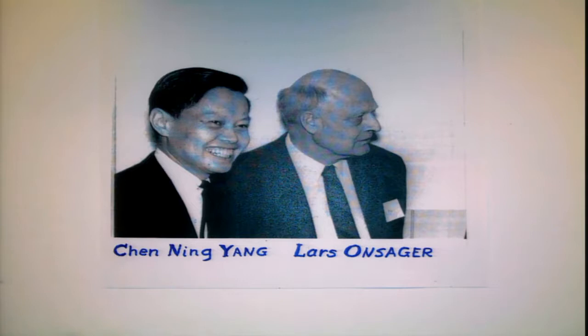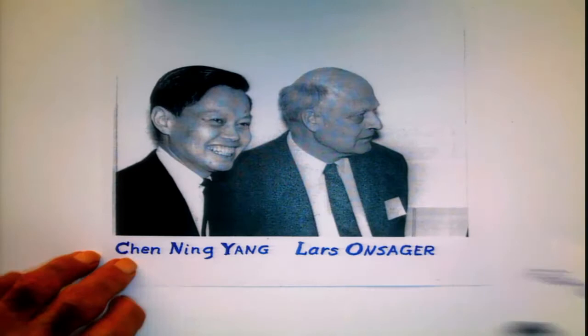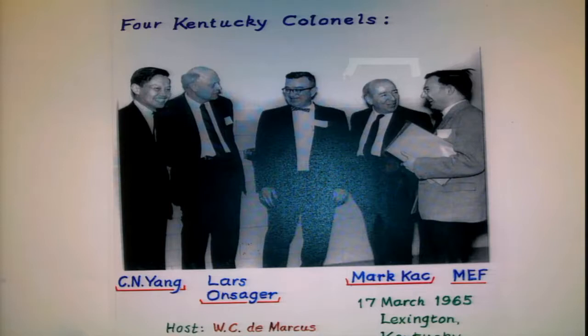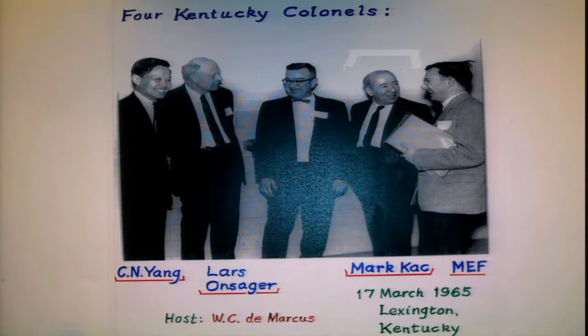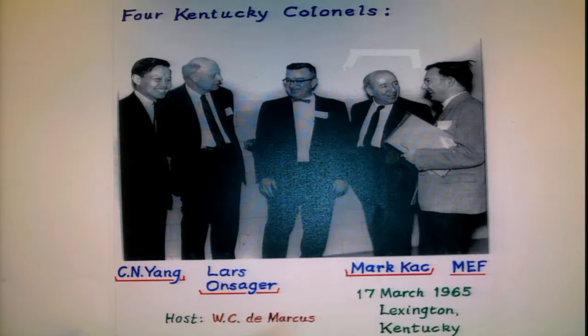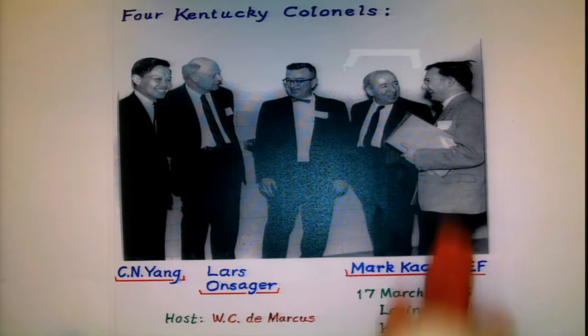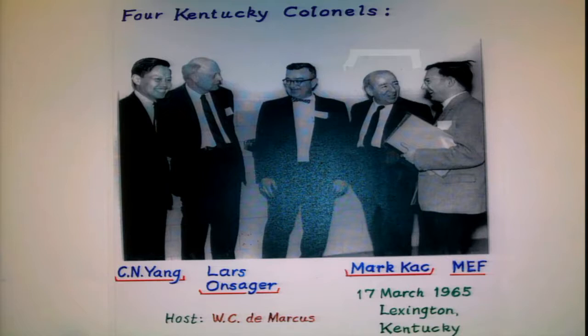In principle, you have a copy, and what I might do is send you a copy of the full one — there were all of us that were there, and we were elected Kentucky colonels. And their host, whose name I had conveniently forgotten, but Frank remembered, was W.C. De Marcus. That's De Marcus in the middle, Yang and Onsager you've seen. This is Mark Katz, who was a long-term friend. That's me at the end, a little younger then.